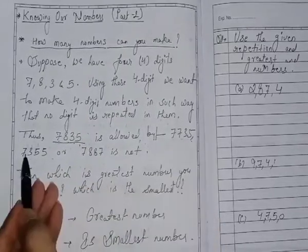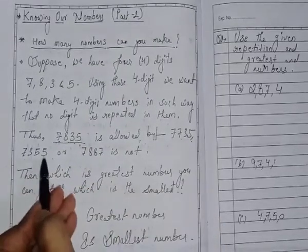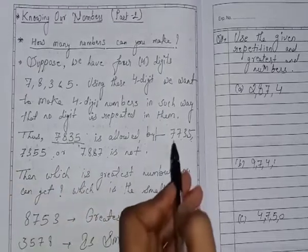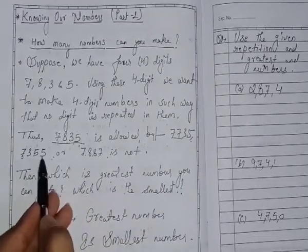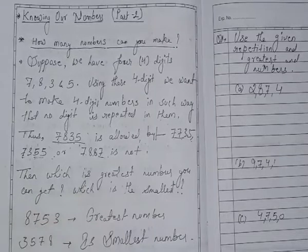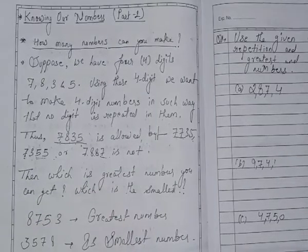But 7735, 7355 or 7887, these types of numbers in which any digit, any 2 digits or 3 digits or 4 digits are repeating, this is not allowed.